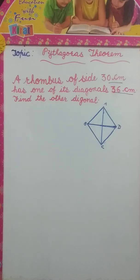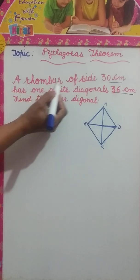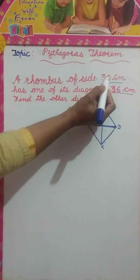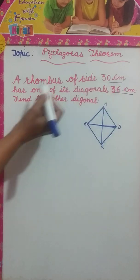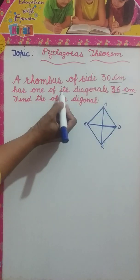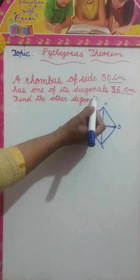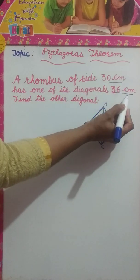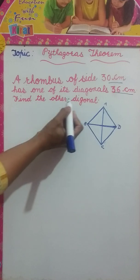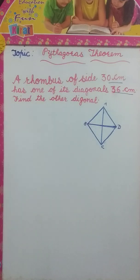Hi guys, welcome back with another video on the topic Pythagoras theorem for class 7. Our question is: a rhombus of side 30 cm has one of its diagonals as 36 cm. Find the other diagonal.